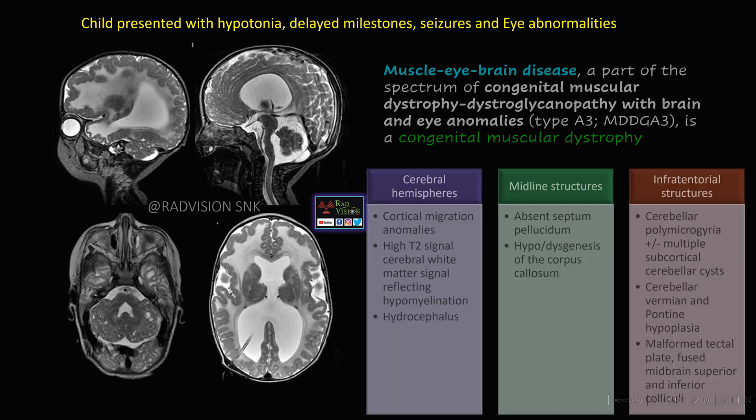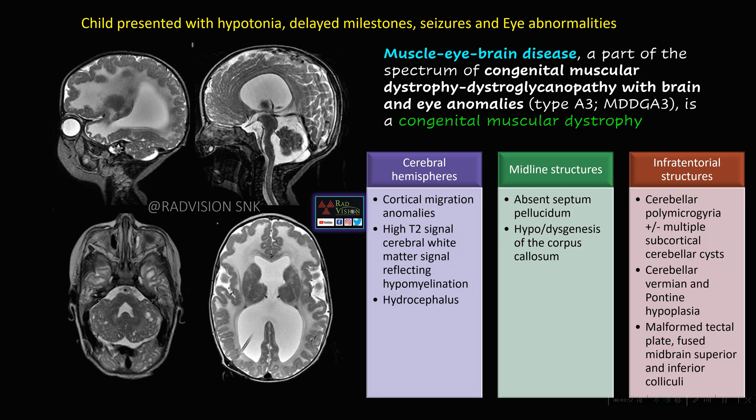This is a classical case of muscle-eye-brain disease, which is a form of congenital muscular dystrophy. You can have cortical migration anomalies with diffuse white matter hyperintensities and hydrocephalus. Midline structures show absent septum pellucidum, hypogenesis or dysgenesis of corpus callosum. In the cerebellum you have abnormal cerebellar folial pattern, multiple cerebellar microcysts, cerebellar vermis or pontine hypoplasia, and midbrain abnormalities. So this is a classical case of muscle-eye-brain disease or congenital muscular dystrophy.